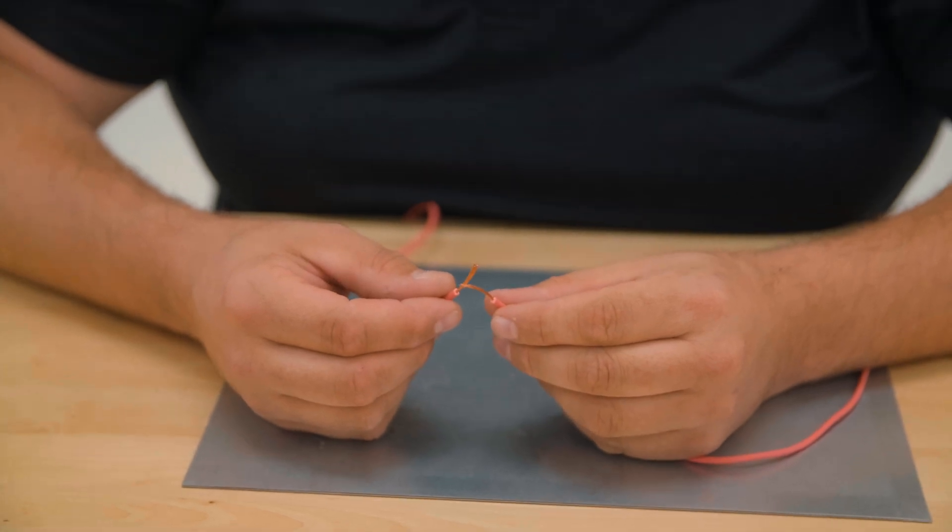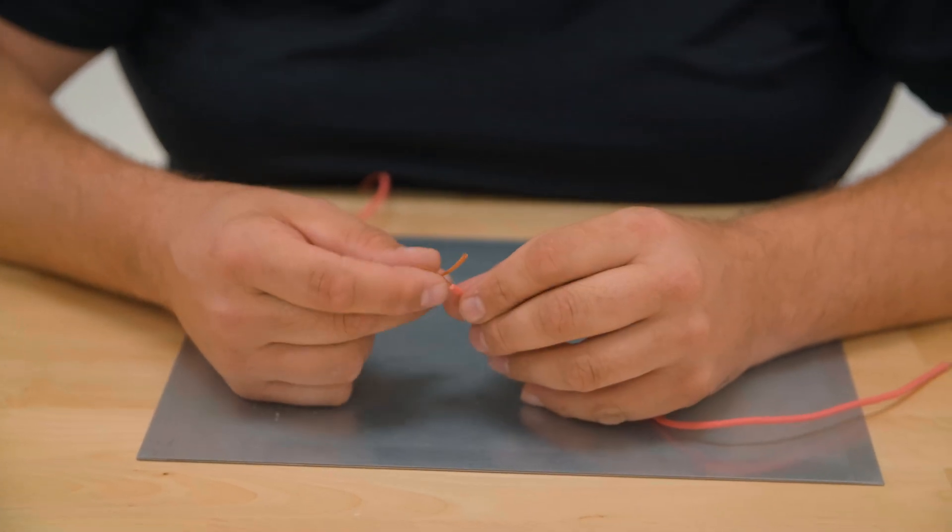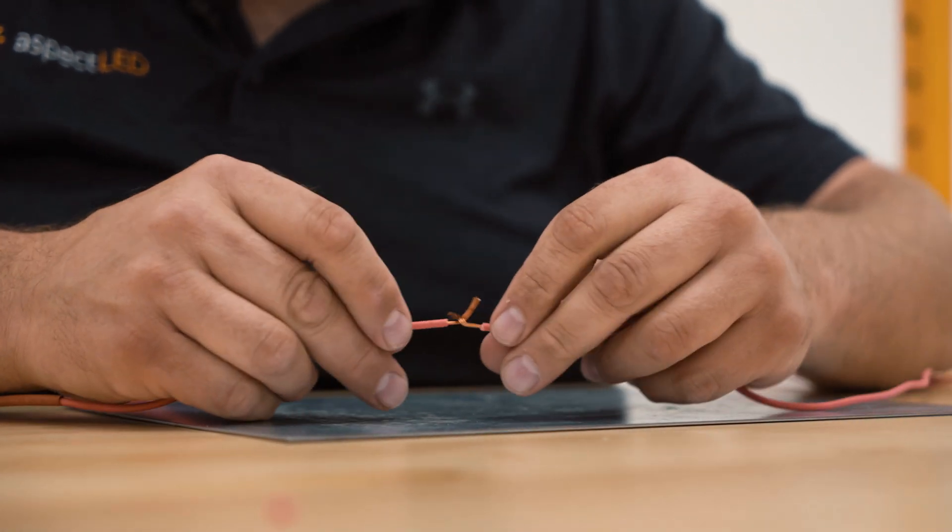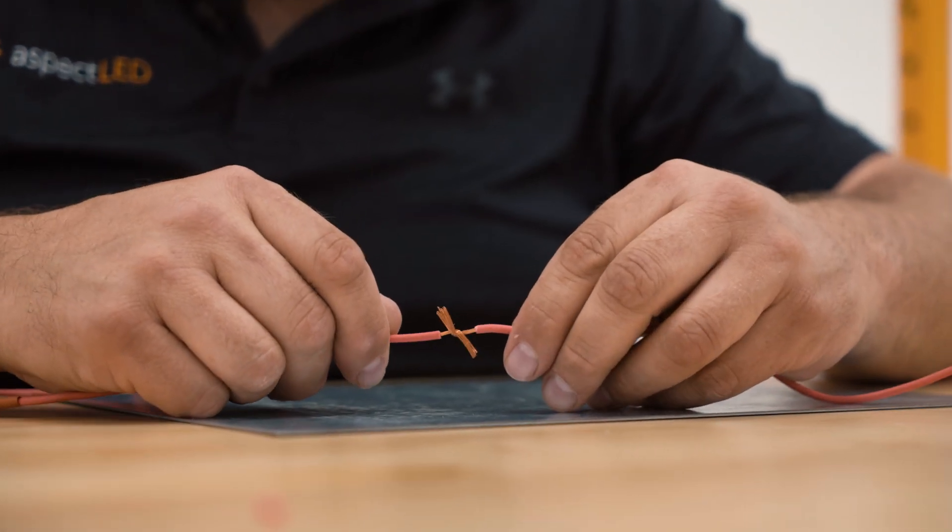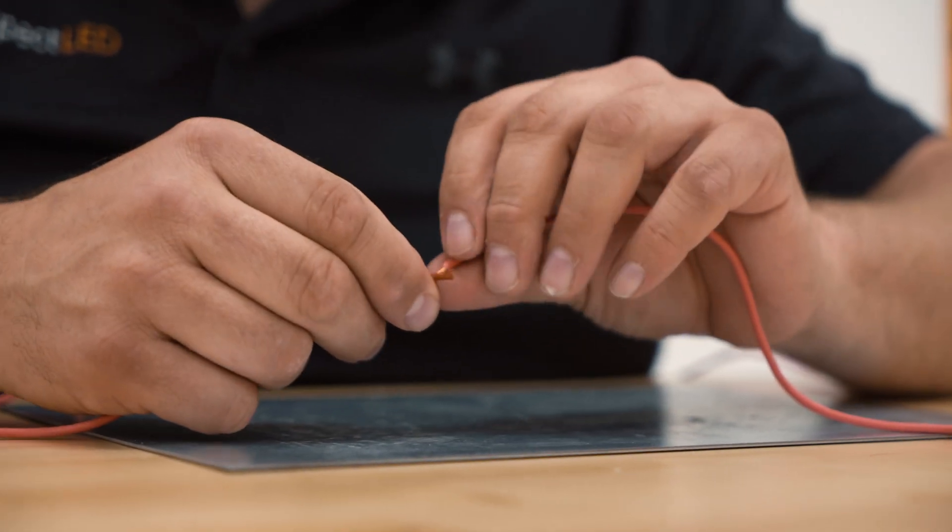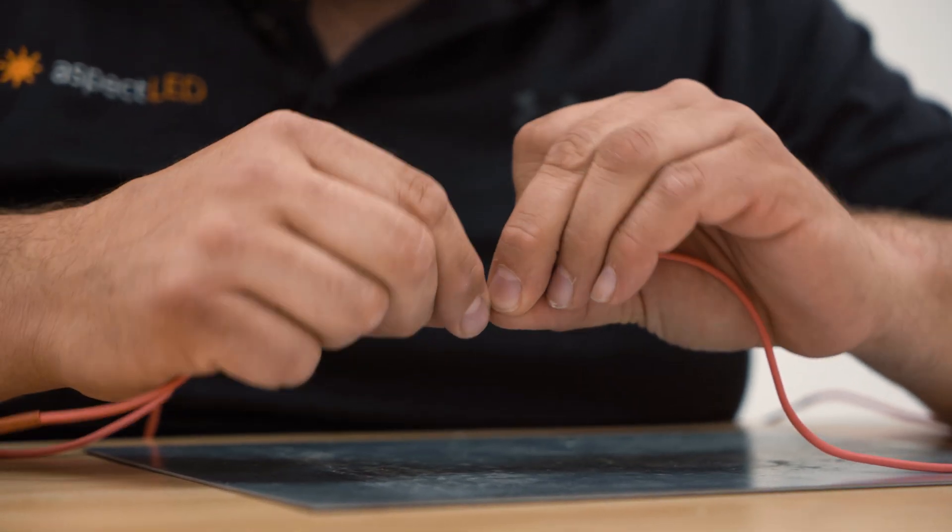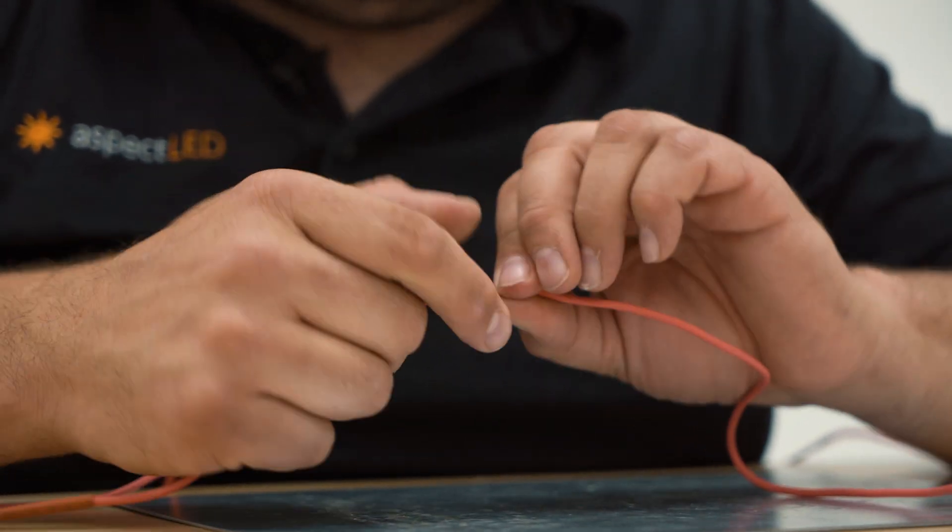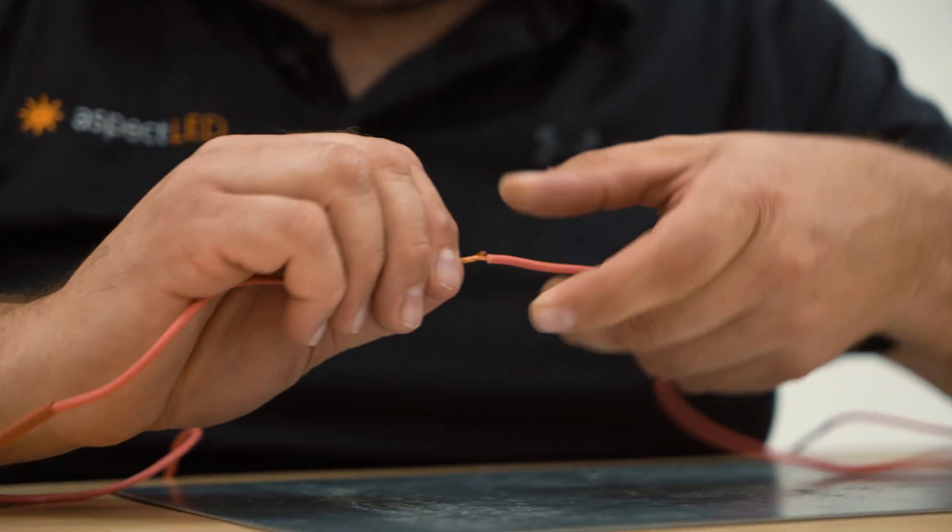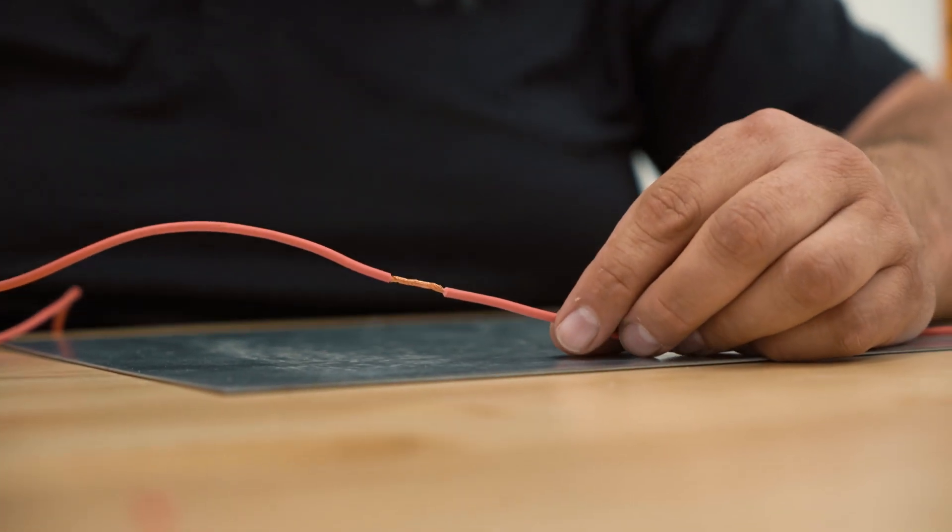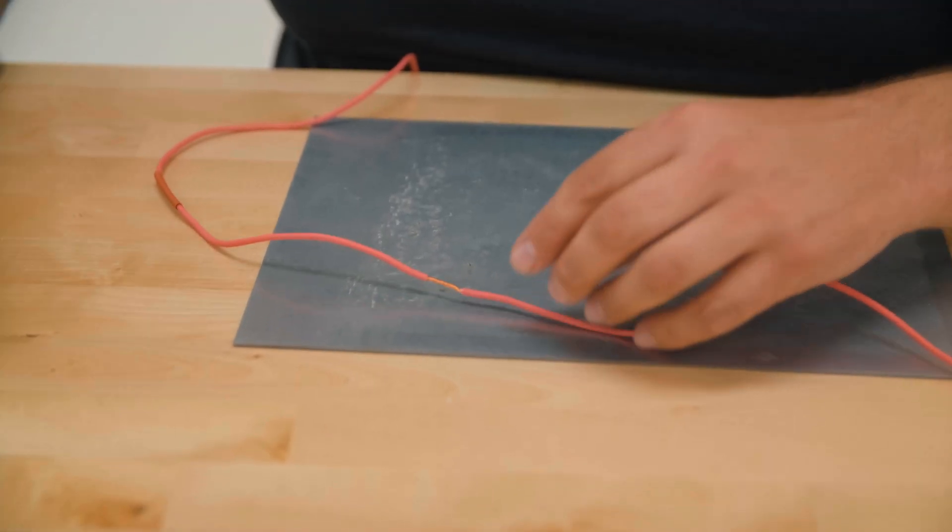We're going to combine these and do what's called a telegraph joint. So to do that, we're going to cross the two wires like this to start. You can see that right there. We're just going to twist them on each other all the way. This is a Western Union or a telegraph splice. Now we've got the two wires combined.